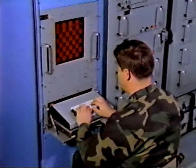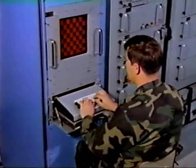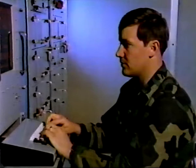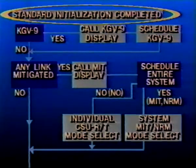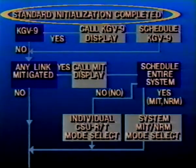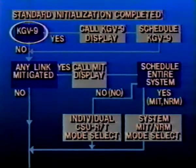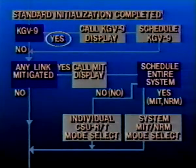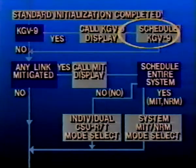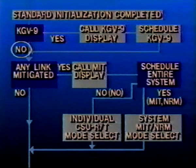Turn-on and initialization are the same as for an unmitigated USC-28. After initialization is complete, additional steps are required to set up for mitigation operation, depending on the network requirements specified in your NCB. From a cold start, the first decision after turn-on and initialization is whether or not the KGV-9s are to be used. To use the KGV-9s, schedule them the same way as for an unmitigated USC-28. If the choice is not to use the KGV-9s, no operator action is required.